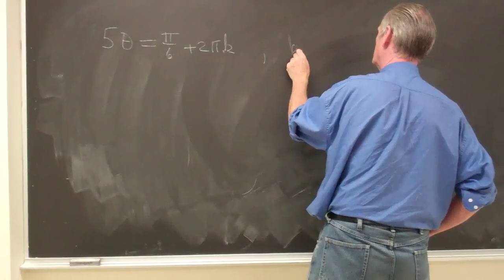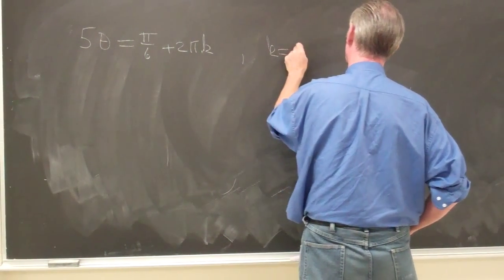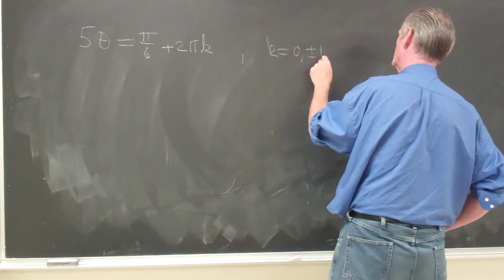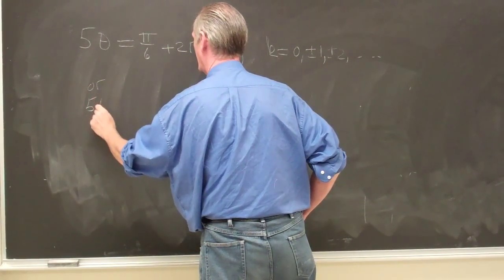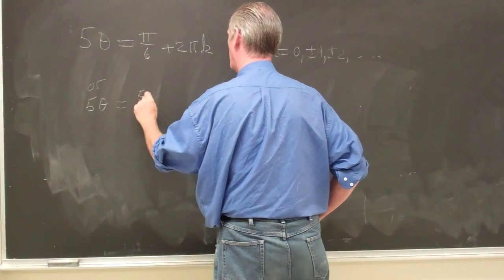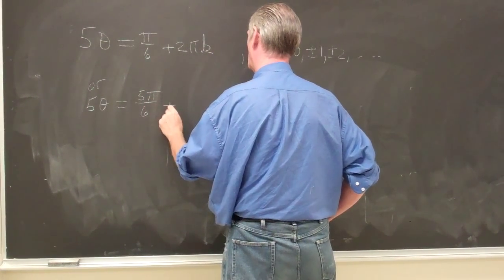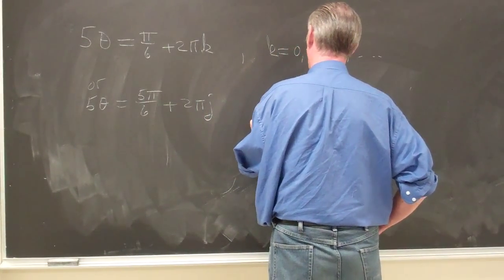k is allowed to vary among the integers, or 5 theta is equal to 5 pi over 6 plus 2 pi times j.